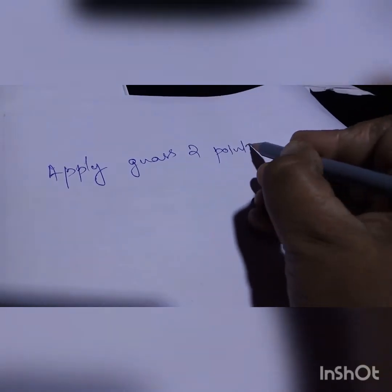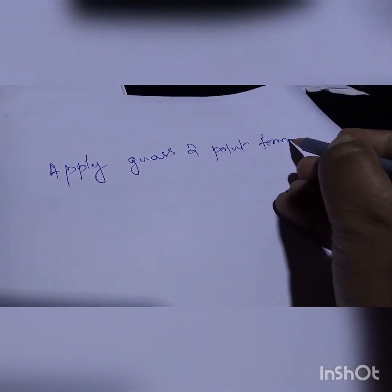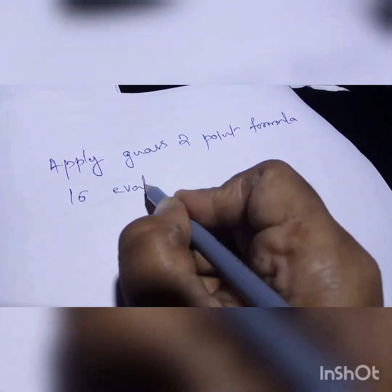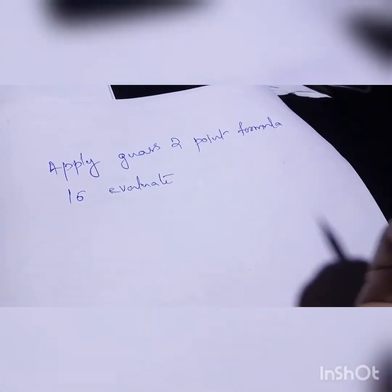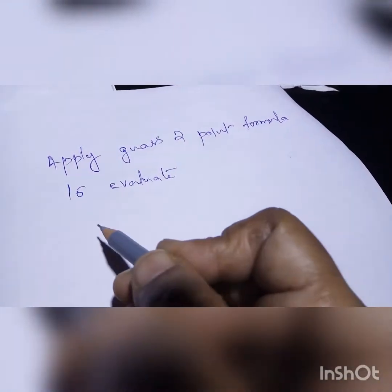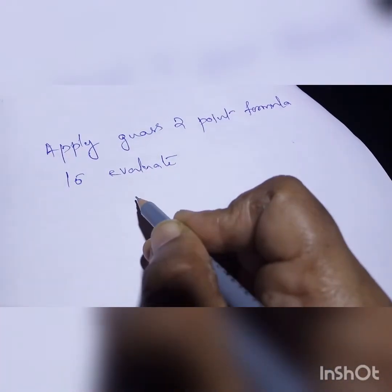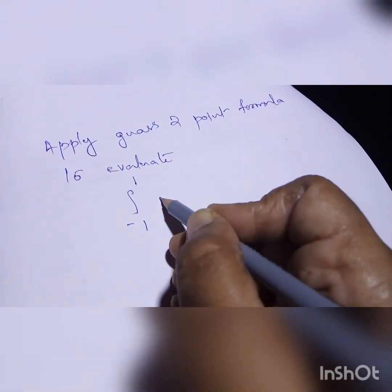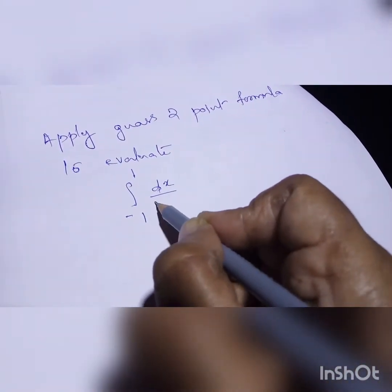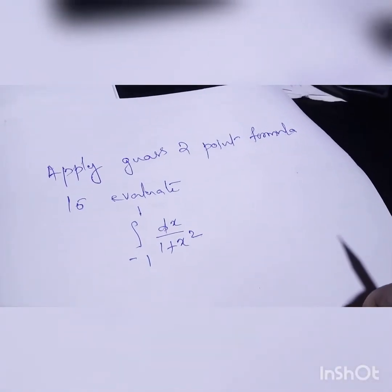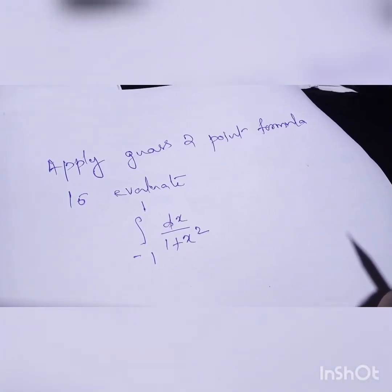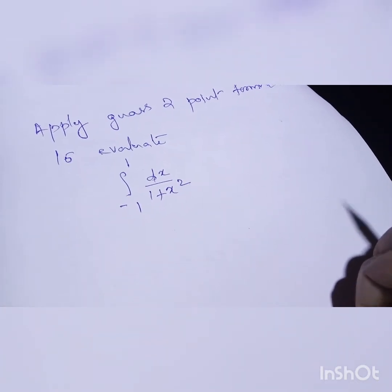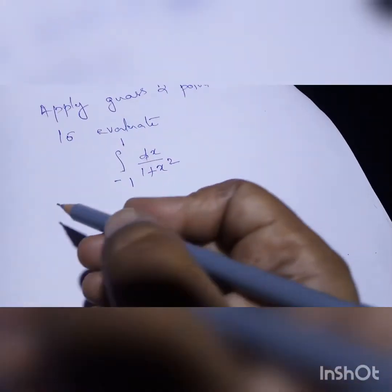Now let's see an example. Apply the Gauss two-point formula to evaluate the integration of minus 1 to 1 of dx/(1 + x²). This is the question: apply the Gauss two-point formula to evaluate the integration of minus 1 to 1 of dx/(1 + x²).